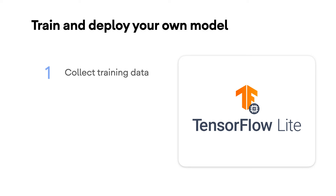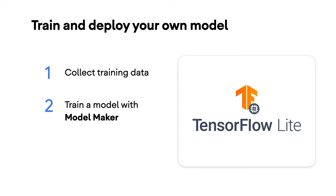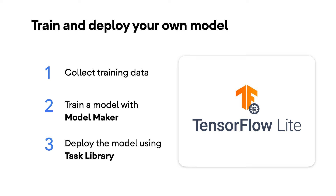If you want to train your own model, then the steps required are: first, collect and label your training dataset from your own problem domain; second, use TensorFlow Lite Model Maker to train a custom object detection model; and finally, apply the custom model to your mobile app using TensorFlow Lite Task Library.